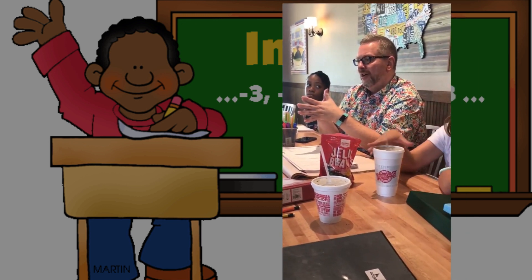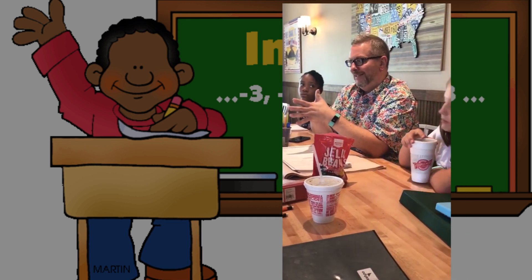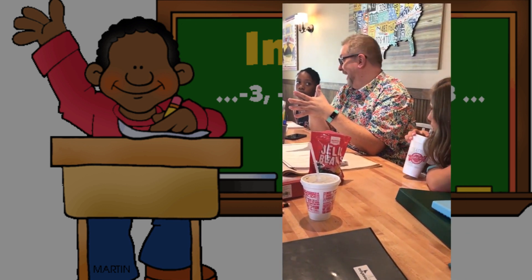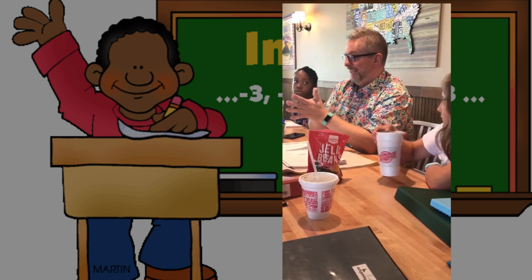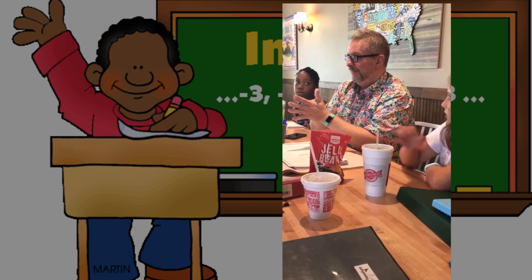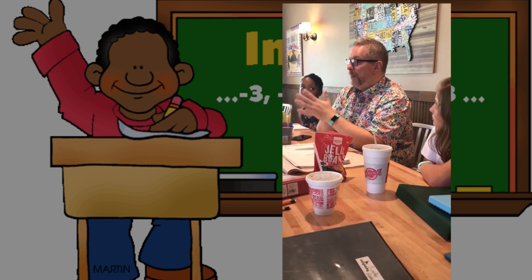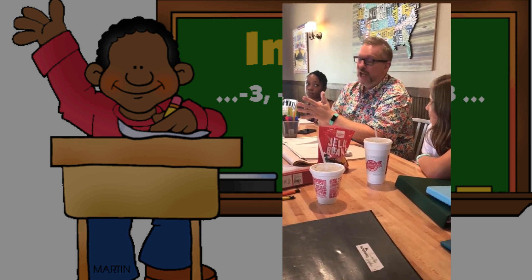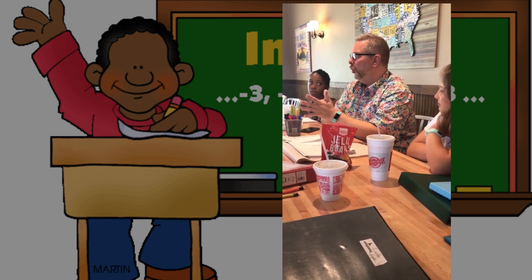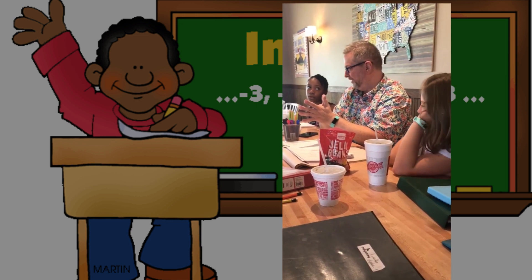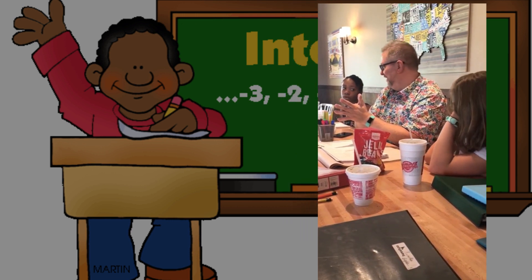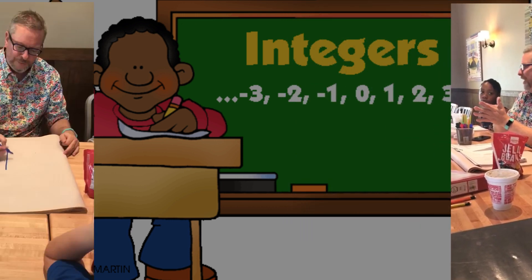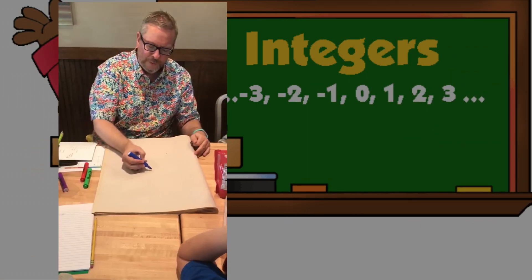Integers are positive and negative — positive and negative whole numbers, and zero. So y'all see how you do it before?